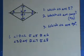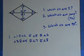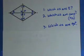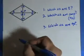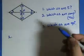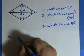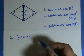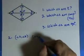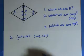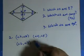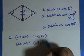Let's answer question two: which angles are complementary? Angle two and angle three are complementary. Angle four and angle five are complementary. Angle six and angle seven are complementary. Angle eight and angle one are complementary.